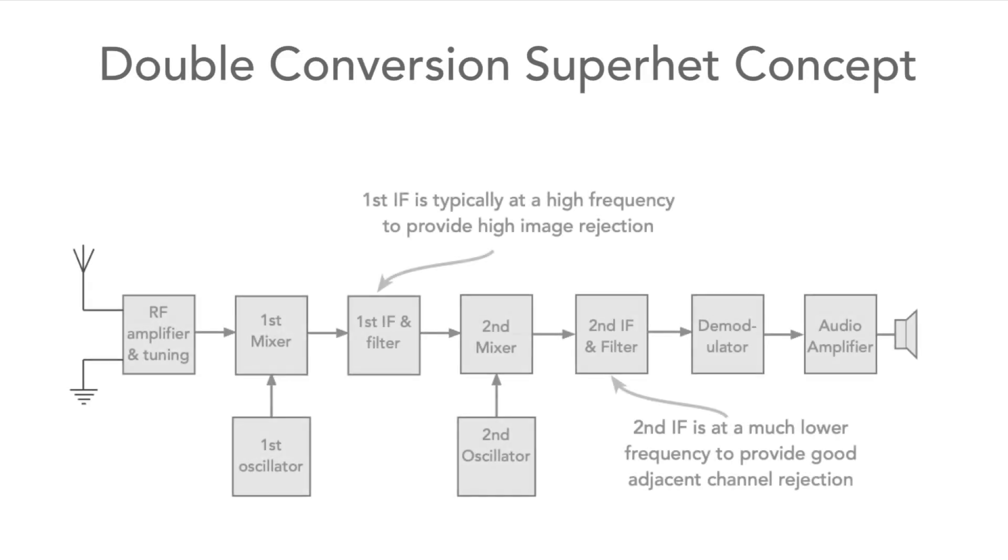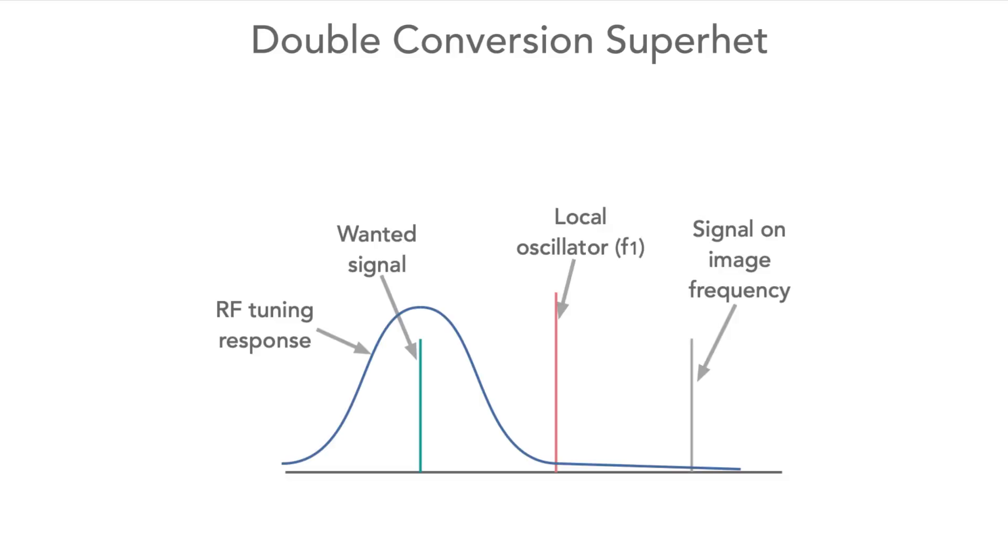So let's discover one reason why a double conversion superhet radio might be needed. The higher the IF frequency, the more separated the image is. You get more distance from the image and that makes it easier to filter that out at the RF. For a lower IF frequency you can actually get a tighter channel bandwidth from your filter at the IF, and that gives you better selectivity from adjacent channels.